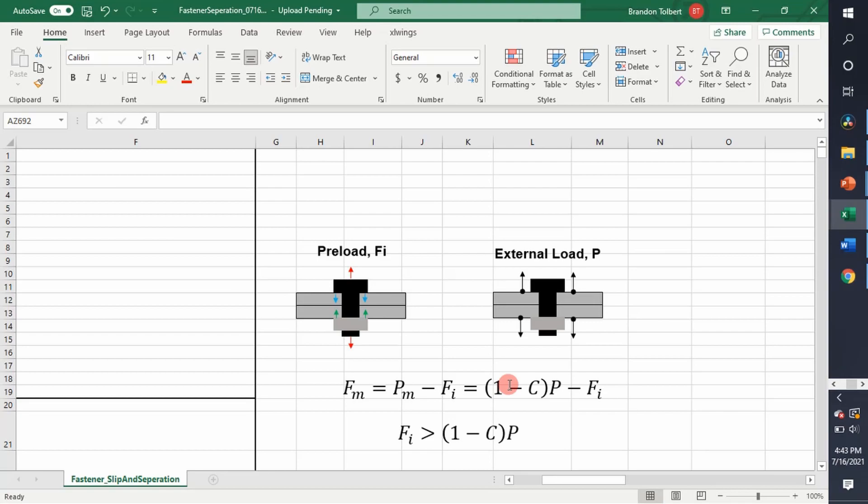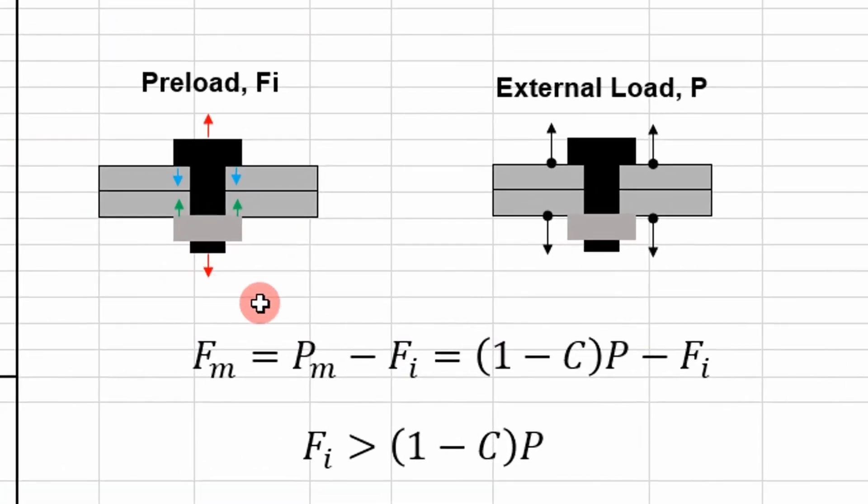One of the criteria we evaluate is joint separation. If you look at this diagram right here, essentially we're looking at two things: the preload and the external load. The preload force is going to be the same felt between all members. Your bolt will be in tension and your members will be in compression. Because they're in contact with each other, they're going to feel the same preload force between the two.